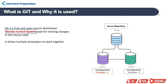Version control system means Git allows multiple developers to work together. To keep track of who has made changes in the code and what changes are done, a version control system is used. It helps by maintaining a history of what changes have happened and who has done them.